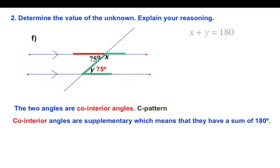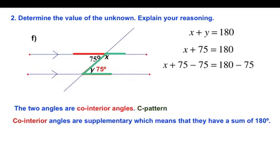So we can write the equation X plus Y equals 180. But in the first part of the question, we found that Y was 75 degrees. So we can sub in for Y equals 75. And so now we're going to subtract 75 from both sides and we find that X is equal to 105 degrees.